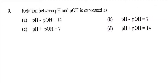Question nine: The relation between pH and pOH is expressed as — option A pH minus pOH equals 14, option B pH minus pOH equals 17.7, option C pH plus pOH equals 7, or option D pH plus pOH equals 14. The right answer is D, pH plus pOH equals 14.